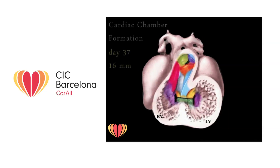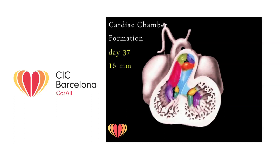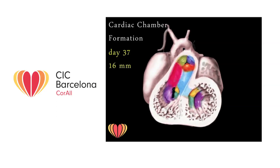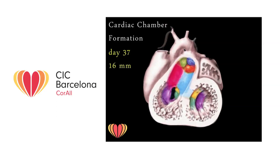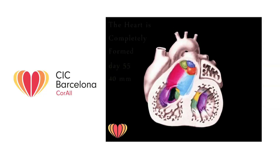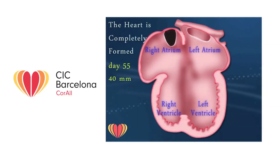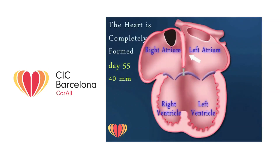Meanwhile, the distal part of the bulbus gives rise to both proximal aortic tract and pulmonary artery tract. At day 37, the embryo measures 16 mm. The heart is about to take its definitive shape. In this phase, the heart completes interatrial and interventricular septal formation. At day 55, the embryo measures 40 mm. The heart is completely formed.